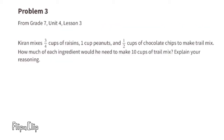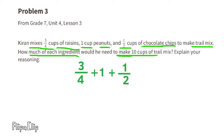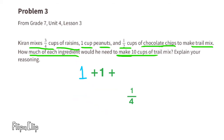Problem number 3 from 7th grade Unit 4 Lesson 3: Kieran mixes three-fourths cup of raisins, 1 cup of peanuts, and half a cup of chocolate chips to make trail mix. How much of each ingredient would he need to make 10 cups? Let's find how many cups this recipe makes: three-fourths plus 1 cup plus one-half cup. One-half equals two-fourths, so three-fourths plus two-fourths equals five-fourths, which is 1 and one-fourth, plus 1 cup equals 2 and one-fourth cups total.